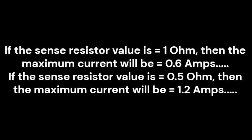If the sense resistor value is 0.5 ohm, then the maximum current will be 1.2 ampere. So by changing the sense resistor value, you can precisely set the current limit.